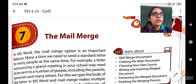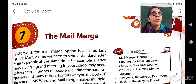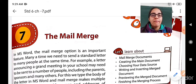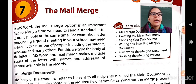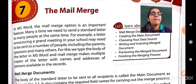In MS Word, the mail merge option is an important feature. Many a time we need to send a standard letter to many people at the same time. For example, a letter announcing a grant meeting in your school may need to be sent to a number of people, including the parents, sponsors, and many others. For this, we type the body of the letter in MS Word and the mail merge makes multiple copies of the letter with the names and addresses of the persons available in the records.